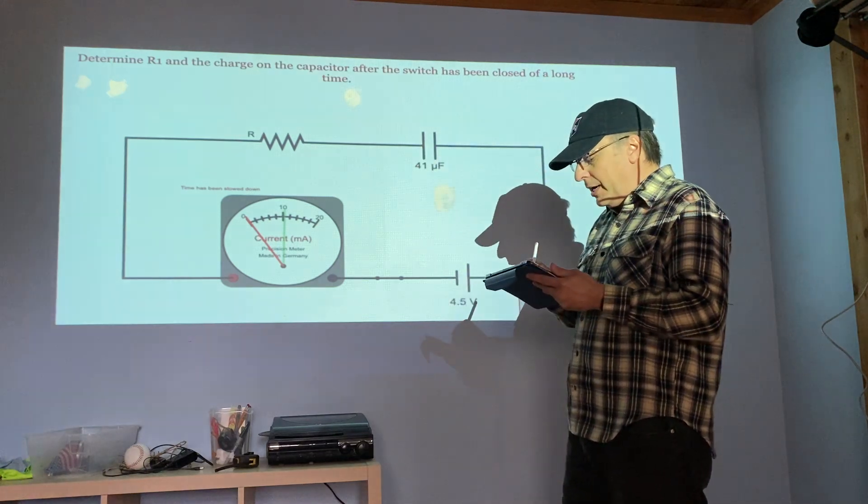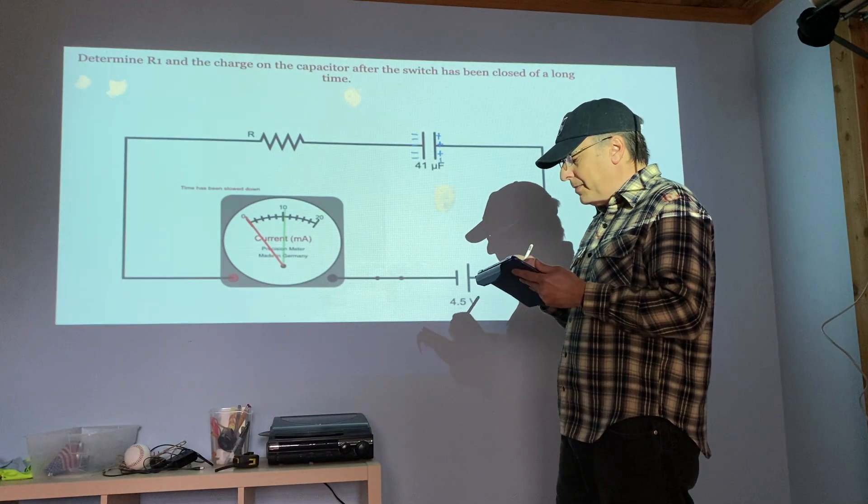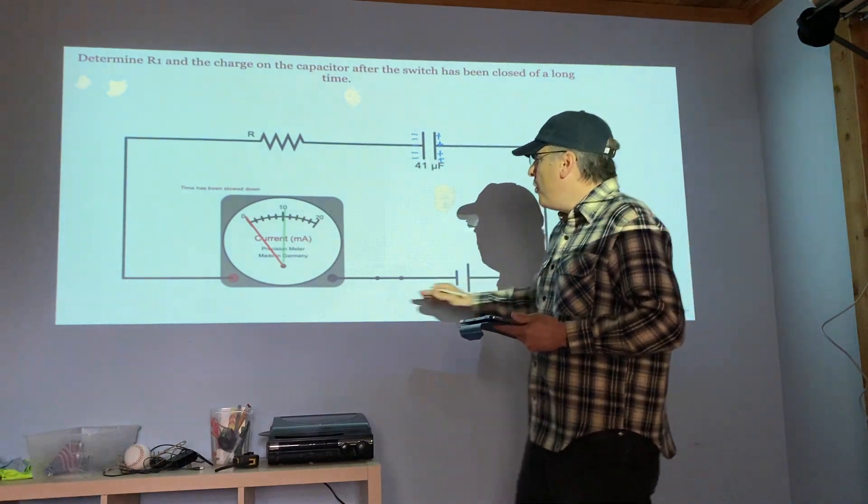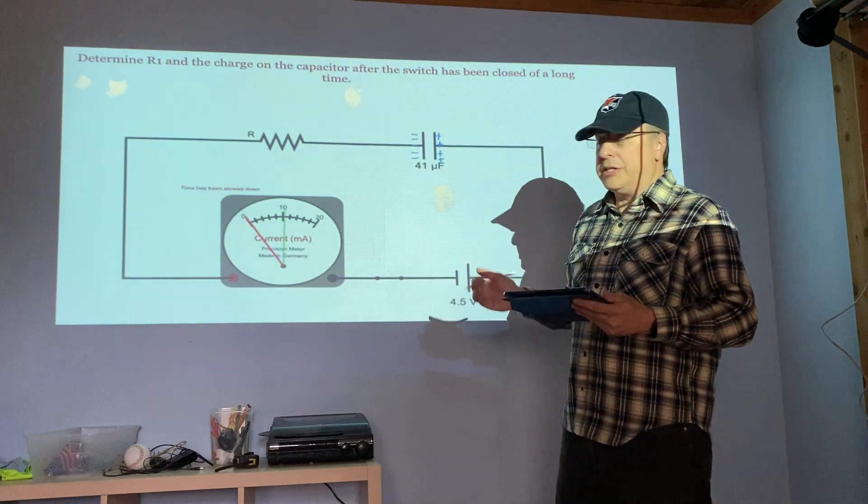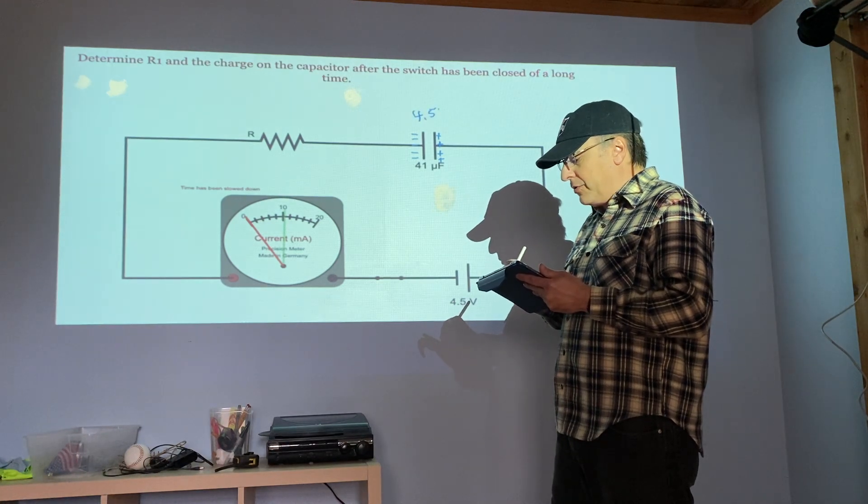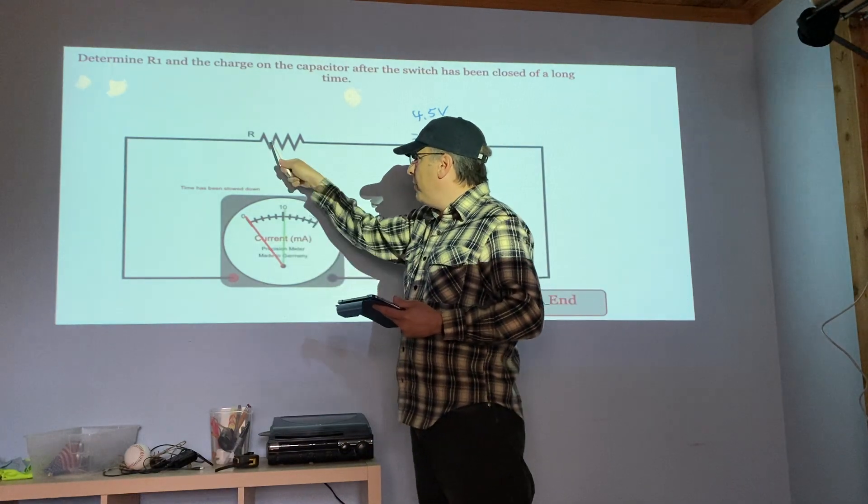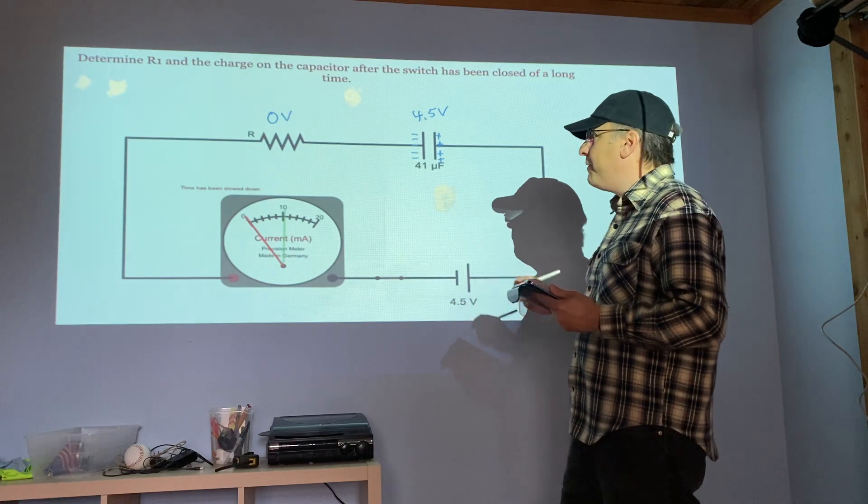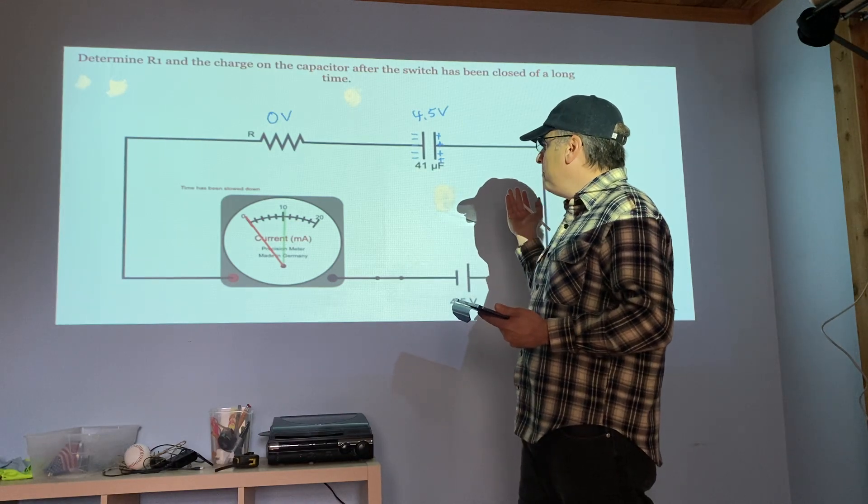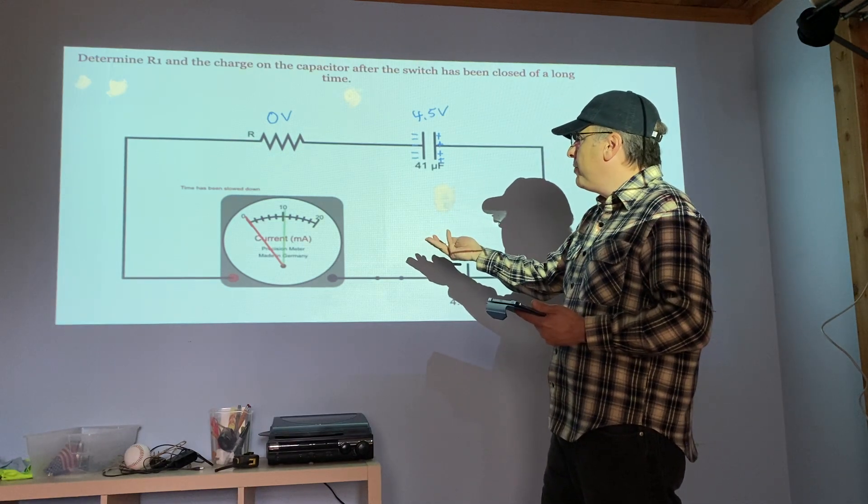What's happening is this capacitor started out uncharged, but as time went on we started to get charges building up on the capacitor. Once the capacitor hits its maximum charge for this voltage, no more charges can be placed on the capacitor. At this point the capacitor has 4.5 volts on it, the battery has 4.5 volts, there is no current flowing through the resistor, so no volts are left across the resistor, and our circuit has hit a long-term status where nothing is flowing through it.